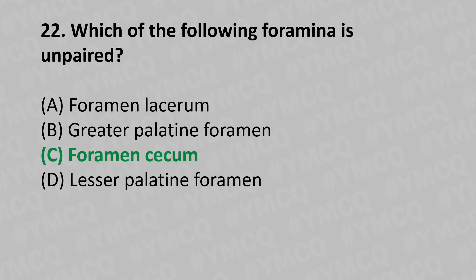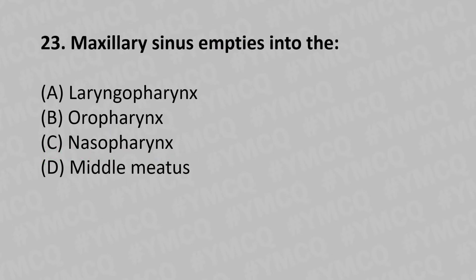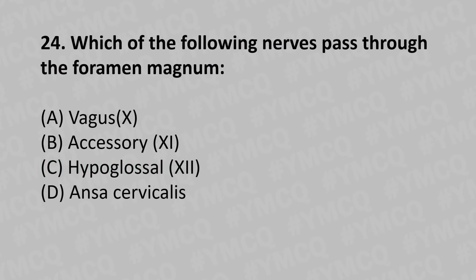Moving to our twenty-third question: the maxillary sinus empties into which space? Option A: laryngopharynx. Option B: oropharynx. Option C: nasopharynx. Option D: medial meatus. Moving to our twenty-fourth question: which of the following nerves pass through the foramen magnum? Option A: vagus nerve. Option B: accessory nerve. Option C: hypoglossal nerve. Option D: ansa cervicalis.